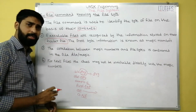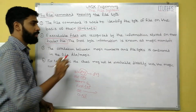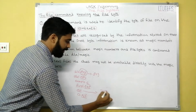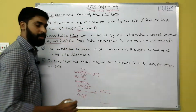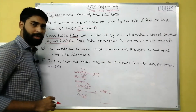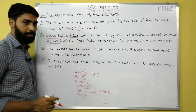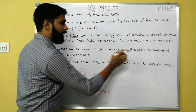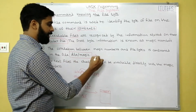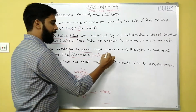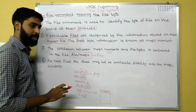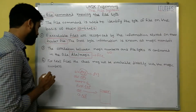How does Unix identify the type of the 'cat' file? It uses a magic number. The first byte of information in the file is known as the magic number. For example, 'cat' is an executable file and its first byte stores the number 410. The correlation between magic numbers and file types is contained in the file '/etc/magic', where all magic numbers are stored. So the executable file magic number 410 returns the type as executable.